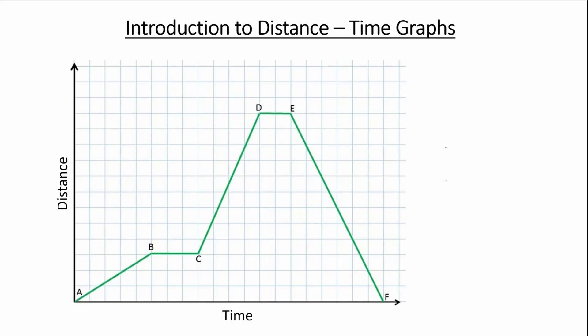Hello and welcome to this tutorial on introduction to distance-time graphs. Here is an example of a distance-time graph where the time goes across the horizontal axis and the distance across the vertical axis. We have labelled the graph with the points A to F, which are going to help us split this graph into different stages to explain what is going on at each stage.